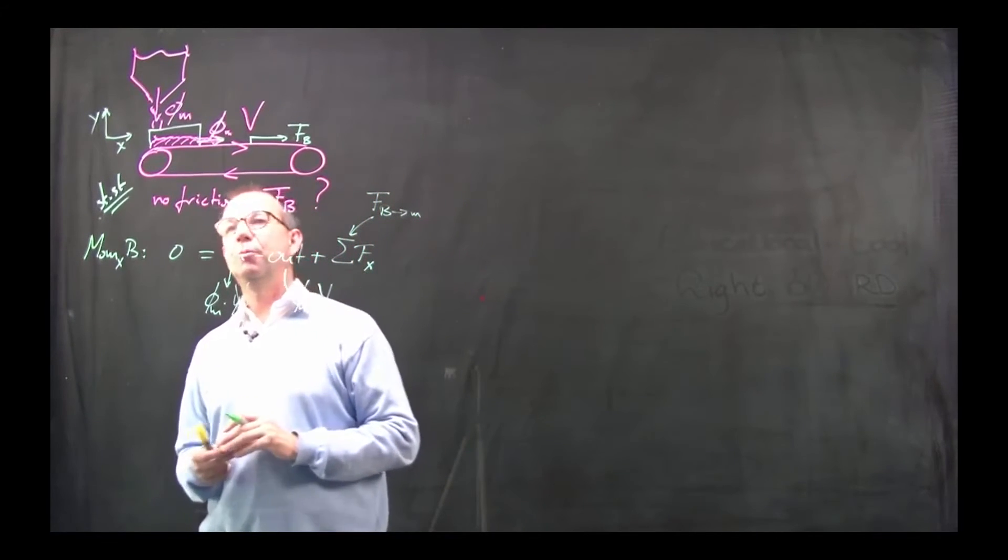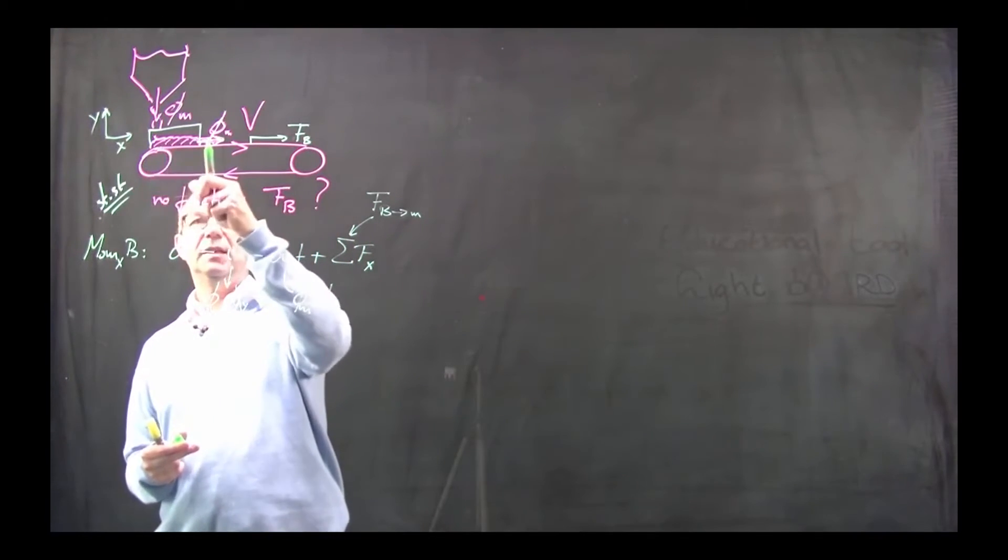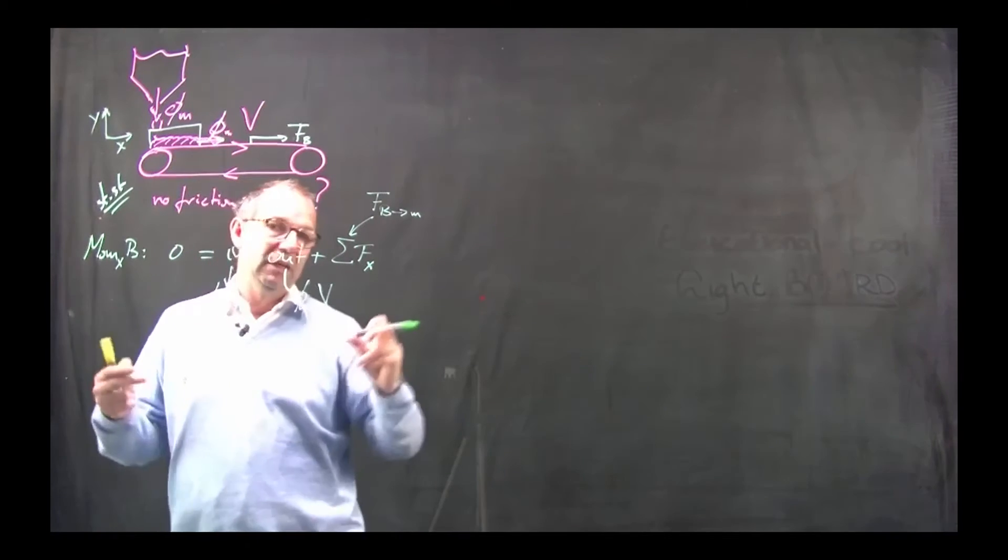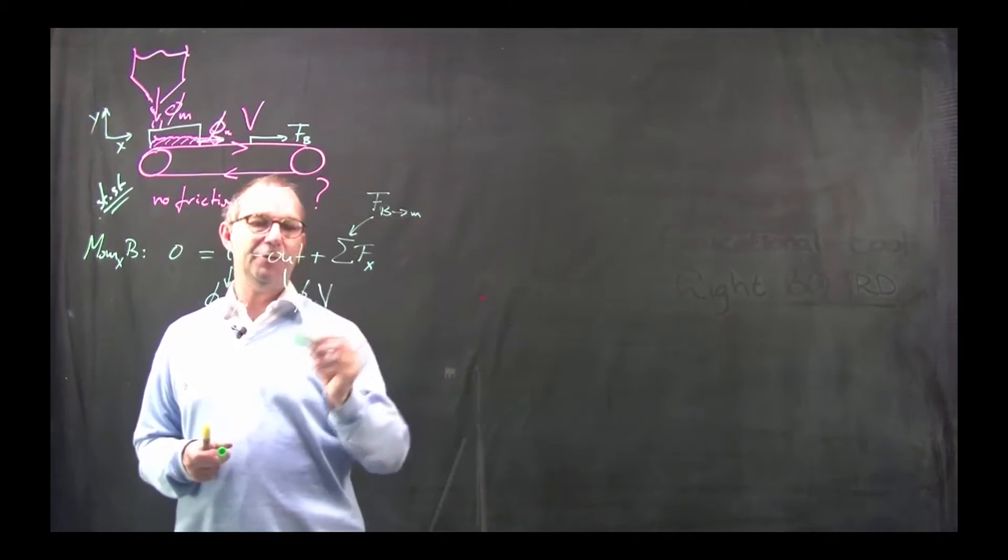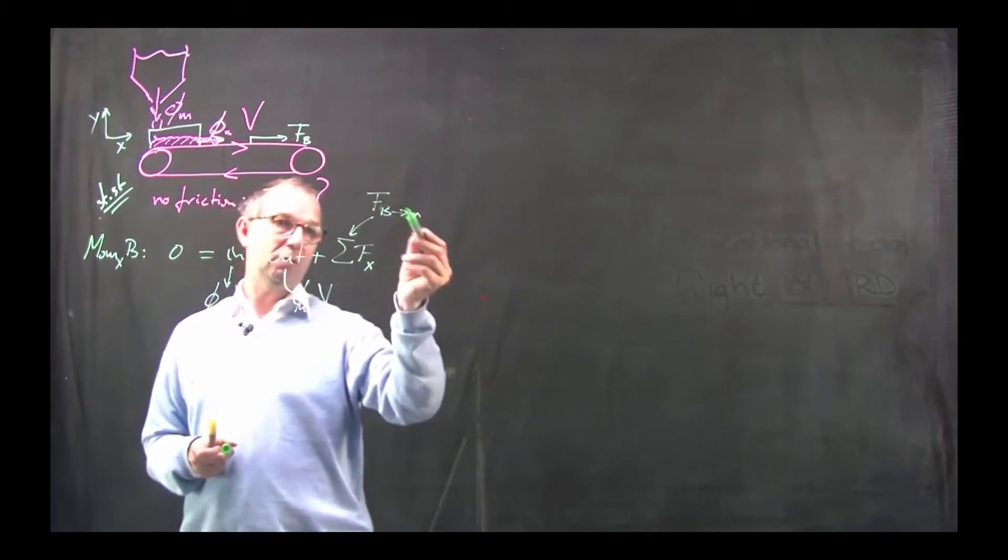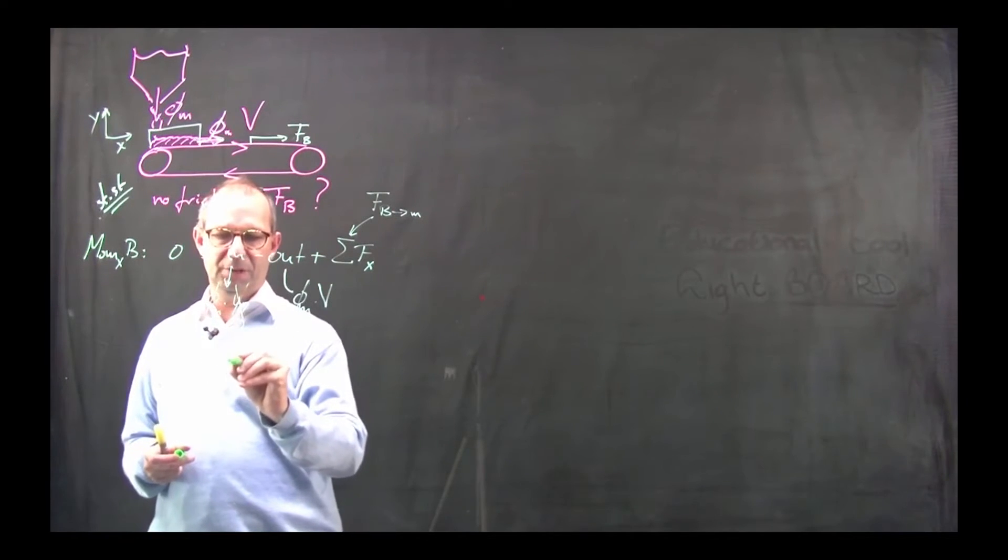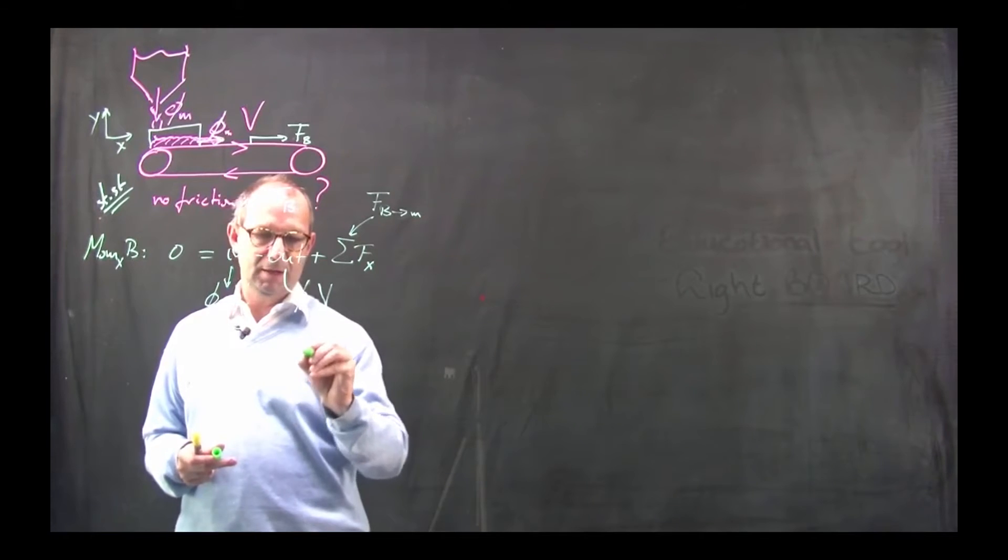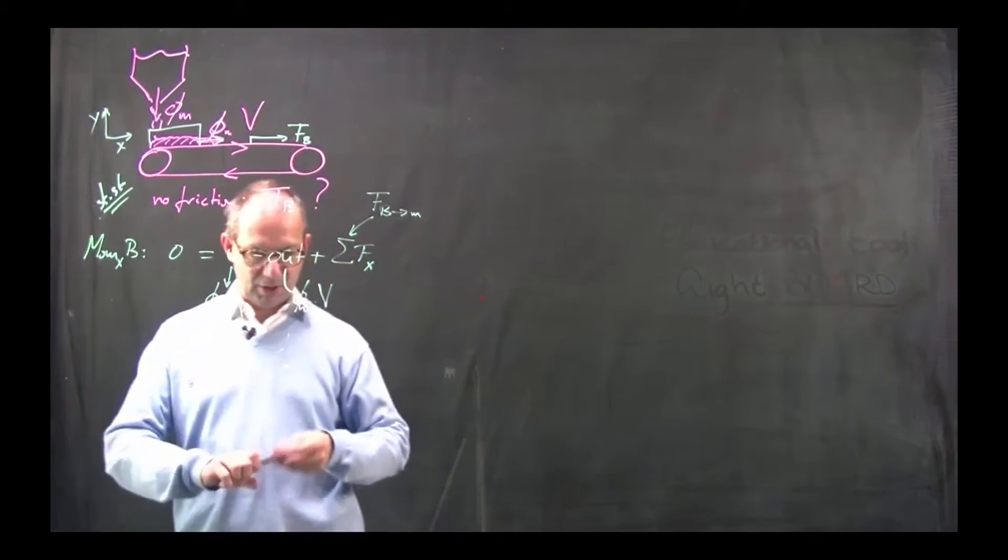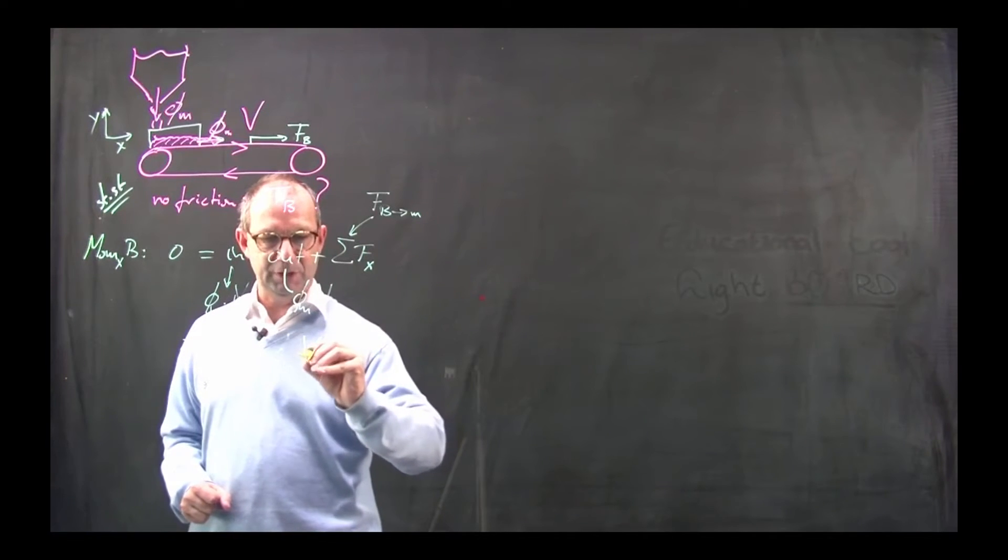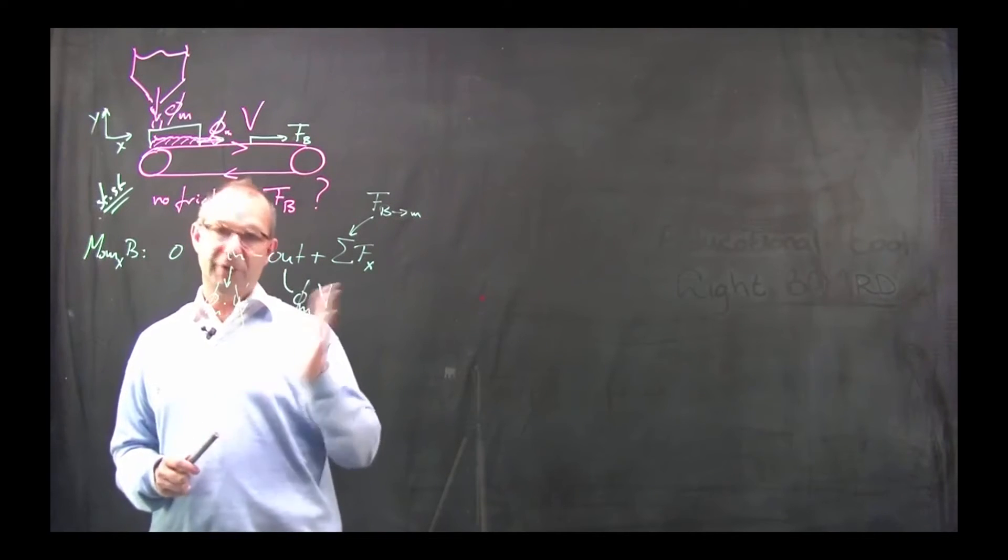There's no other forces. There are no pressure forces involved that do something here. Or rephrase, there's a pressure acting here and the same pressure is acting there. Doesn't do anything. And thus, I have backed out what this force is. The force from the belt on the material is φm times capital V, the velocity with which the belt is the stuff conveying. Okay, fair enough.